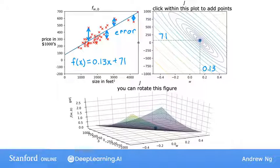I hope that by looking at these figures, you can get a better sense of how different choices of the parameters affect the line f of x and how this corresponds to different values for the cost J. And hopefully, you can see how the better fit lines correspond to points on the graph of J that are closer to the minimum possible cost for this cost function J of W and B.